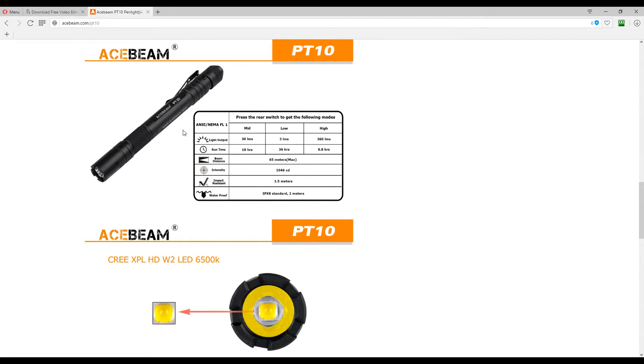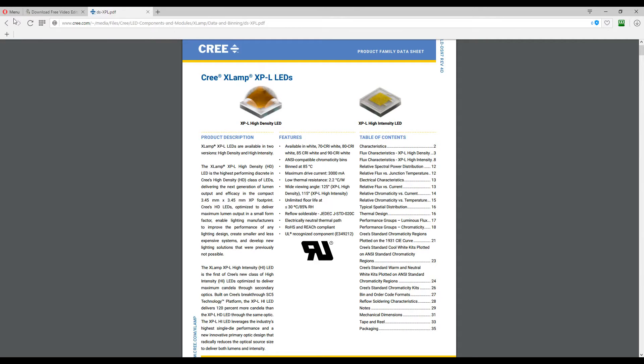So going through the lumen output of the PT10, we see it runs a low 3 lumens for 36 hours, a medium of 30 lumens for 10 hours, and a high of 360 lumens for 0.8 hours, around 50 minutes, powered by the Cree XPL-HD high density W2 LED. So I did some research on the Cree XPL high density.